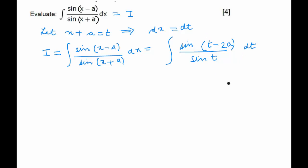We open the numerator with the help of formula sine of A minus B. We get sine of t cos of 2a minus cos of t sin of 2a, whole upon sine t dt.